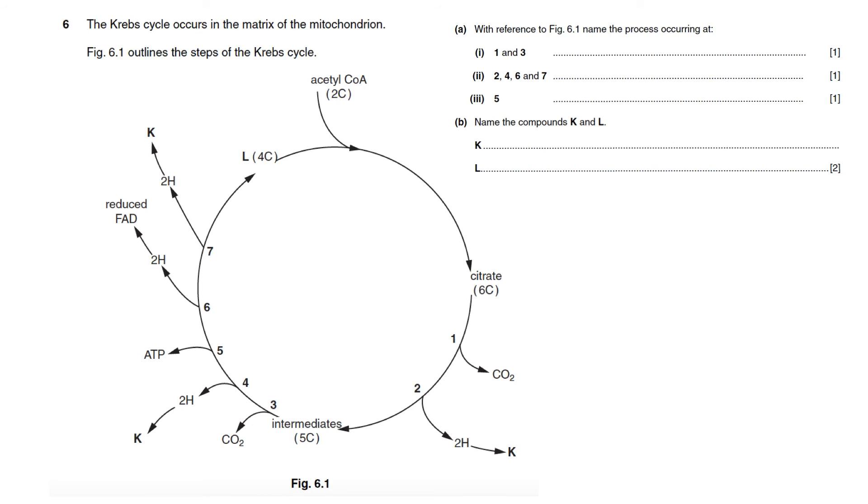The Krebs cycle occurs in the matrix of mitochondrion. Figure 6.1 outlines the steps of the Krebs cycle. A. With reference to figure 6.1, name the process occurring at 1 and 3. Let's check out what happens in 1 and 3. Carbon dioxide molecule is released and carbon dioxide molecule is released. What is the scientific term of the release of carbon dioxide molecule? Decarboxylation.